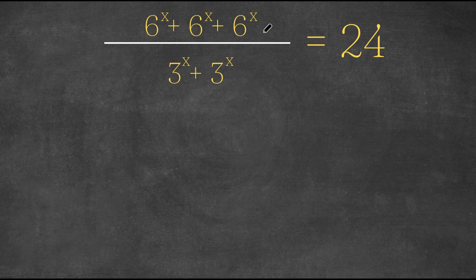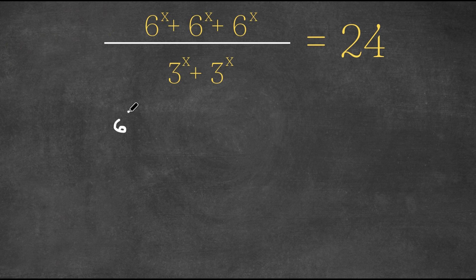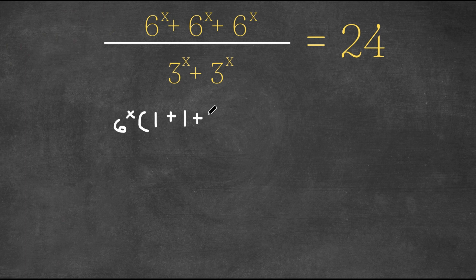So what I'm first going to do for the numerator is I'm actually going to factor out 6 to the power of x. So if I factor out 6 to the power of x, we'll get 6 to the power of x times, 6 to the power of x divided by 1 is simply 1, so we'll get 1 plus 1 plus 1.